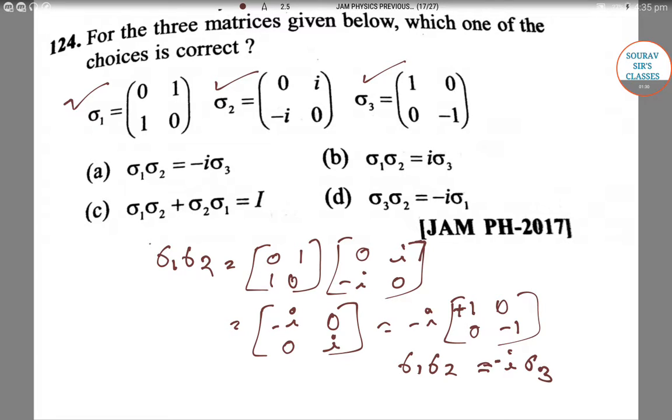There is a negative sign with i here. This is minus i into Sigma three. Sigma three is one zero, zero minus one. So Sigma one into Sigma two equals minus i into Sigma three.